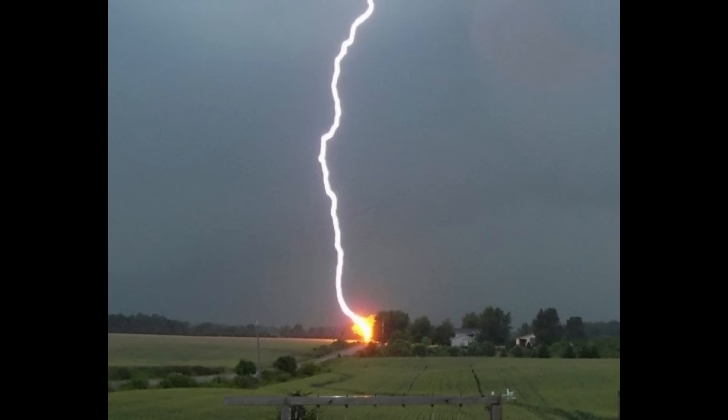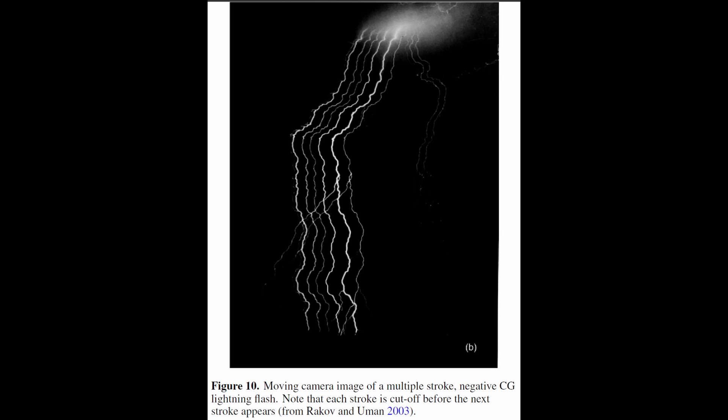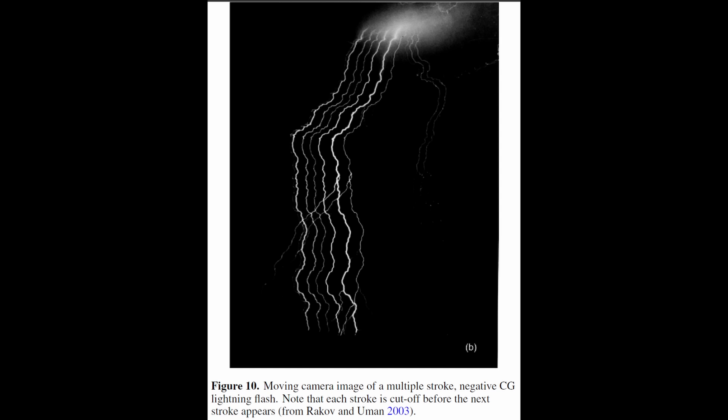In the realm of positive ground flashes, a striking pattern emerges. They almost exclusively consist of a single stroke, succeeded by a continuous current. In contrast, the more prevalent negative flashes tend to unfold with multiple discrete strokes, often lacking a significant continuing current.